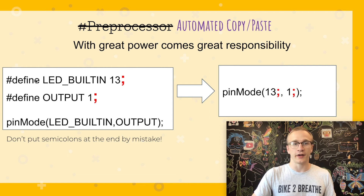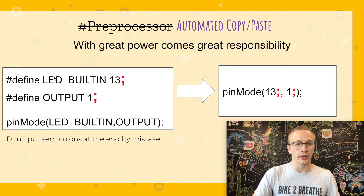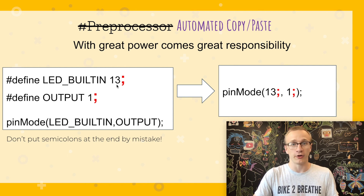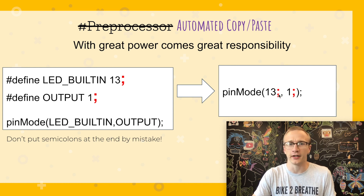Now be warned — a define statement will take whatever the keyword is and anything that comes after it will be replaced. So if you put a semicolon at the end, like LED_BUILTIN 13 semicolon, then anywhere it sees LED_BUILTIN it's going to replace it with 13 semicolon. That would result in something like pinMode 13 semicolon, which we don't actually want. So just be careful when you're doing this.